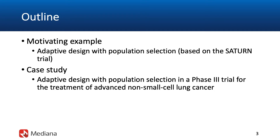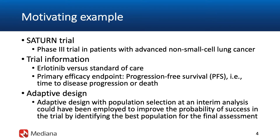We're going to begin with a motivating example that will help us understand key considerations for adaptive designs in this class. It is the Saturn trial, which I introduced back in part two. In addition to that, I'm going to introduce a case study that will help us understand key features of adaptive population selection designs. It will be based on a phase three trial in patients with advanced non-small cell lung cancer.